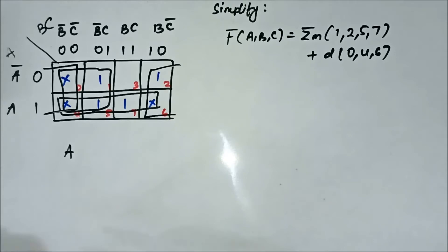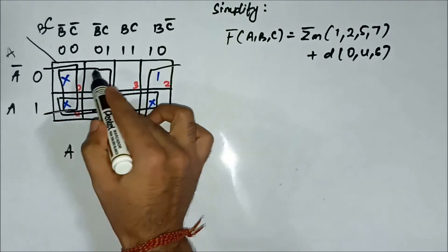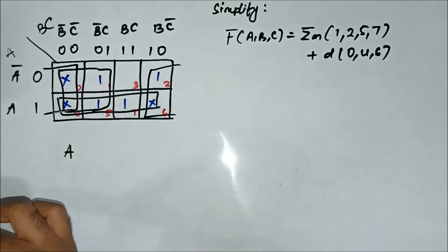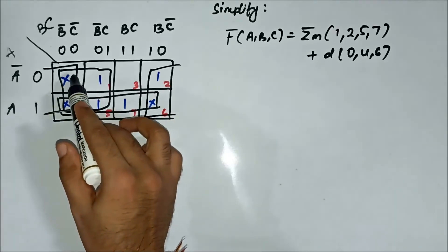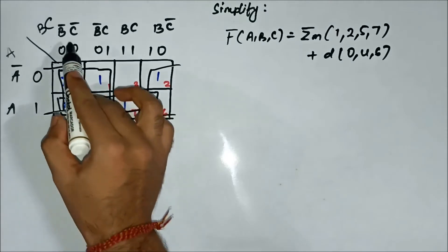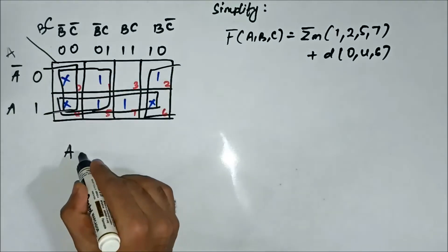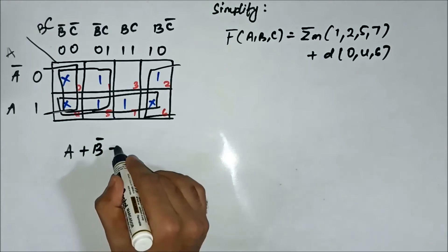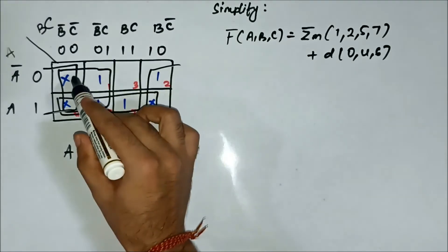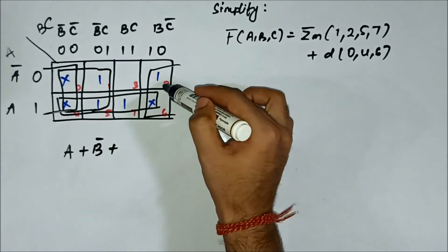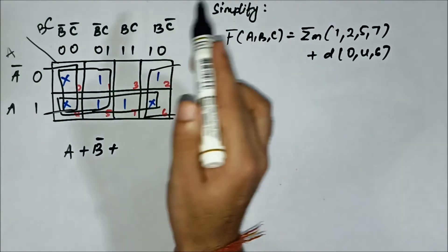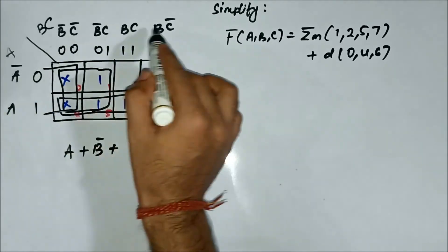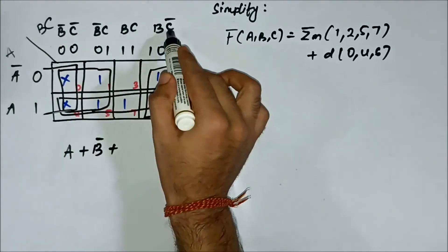For the quad involving cells 0, 1, 4, and 5, there is nothing common on the horizontal side, so the common variable is B-bar. For the last quad involving cells 0, 4, 2, and 6, nothing is common on the horizontal side; on the vertical side we have C-bar common.